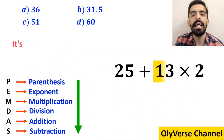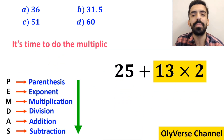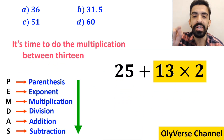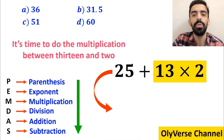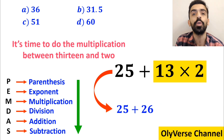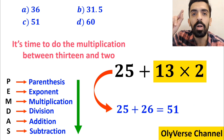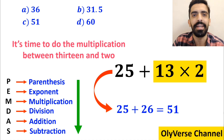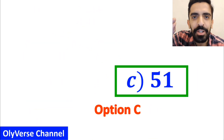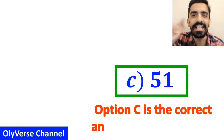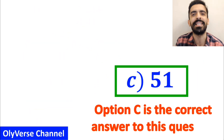Now it's time to do the multiplication between 13 and 2, which gives us 25 plus 26. And finally the value of this expression is equal to 51. Therefore option C is the correct answer to this question.